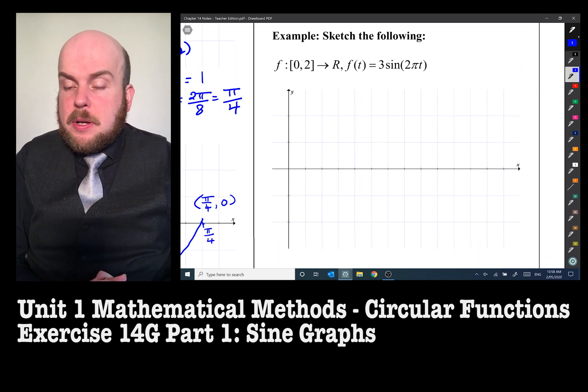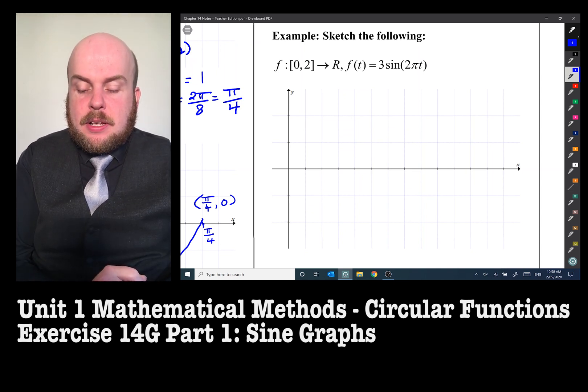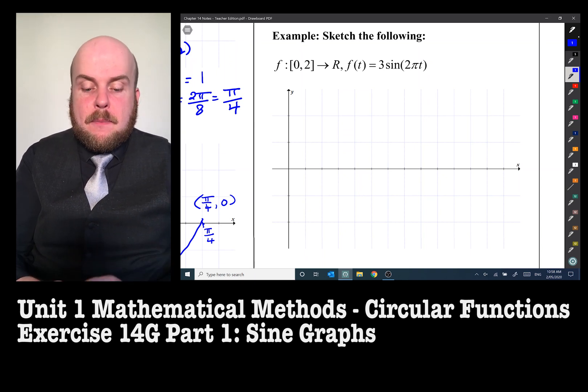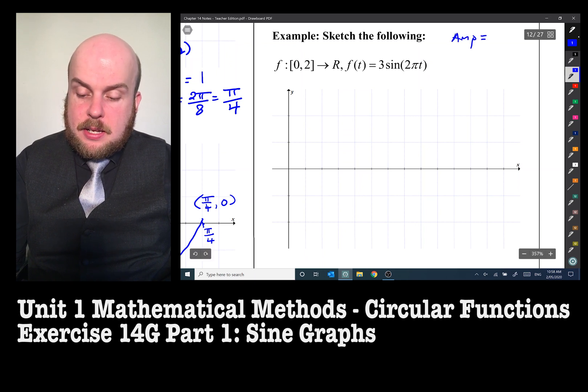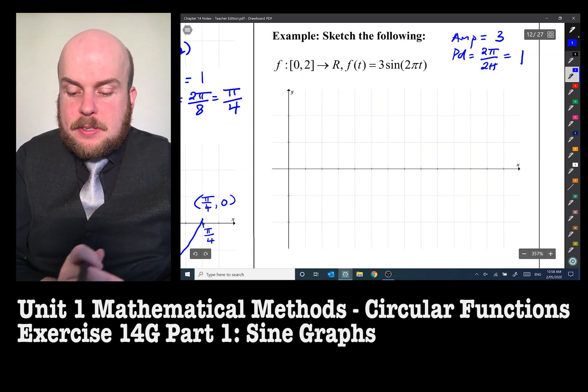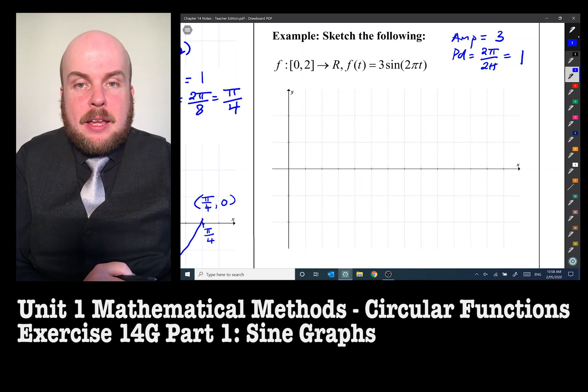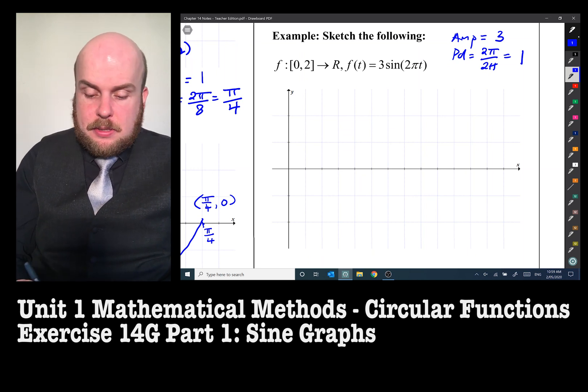Sketch the following. Now, this one has a very specific domain. It says zero to two, f t equals three sine two pi t. So we're now dealing with t's instead of x's, but it's still the same thing. That's okay. But we have been given a restricted domain. So the first thing to do is to get the amplitude, which in this case is three. The period is going to be two pi divided by two pi, which is equal to one. So this is one of these, whenever you see a, when inside of a sine or cosine or tangent, they've put a pi in there, what it does is it changes the x-axis instead of being in terms of pi into whole numbers, which is interesting.